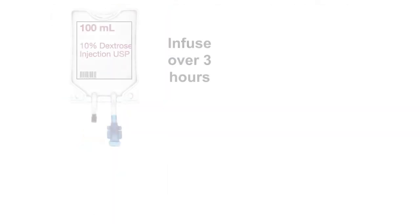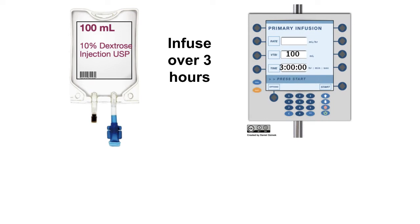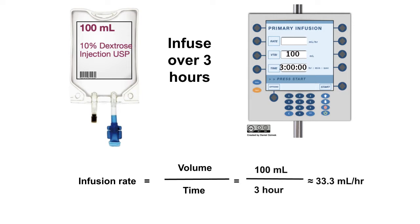As an example, suppose this 100 mL IV bag was required to infuse over 3 hours. The nurse would enter the volume to be infused into the pump, as well as the infusion time. The rate is then calculated by considering the ratio of volume over time. This ratio simplifies to 33.3 milliliters per hour. The IV pump would then regulate the infusion so that the patient receives 33.3 milliliters every hour.